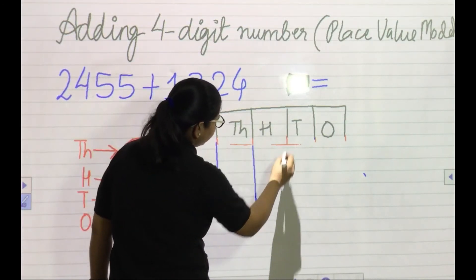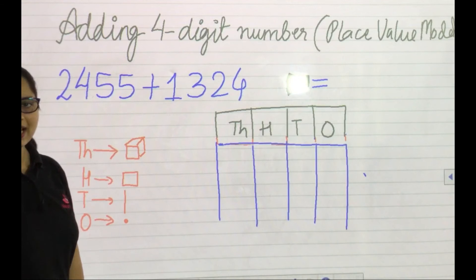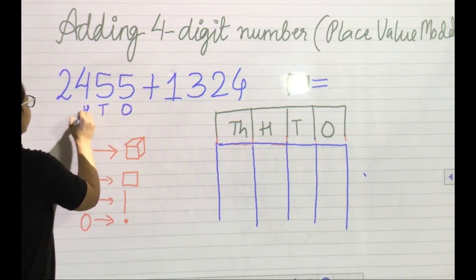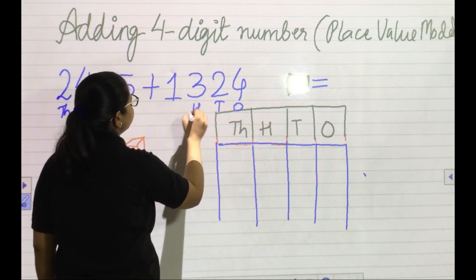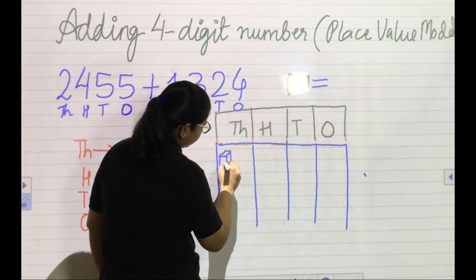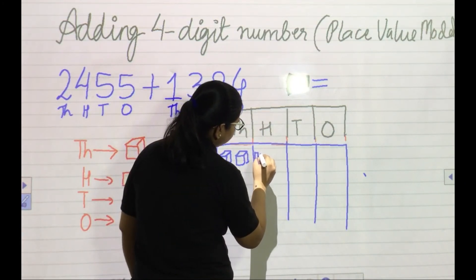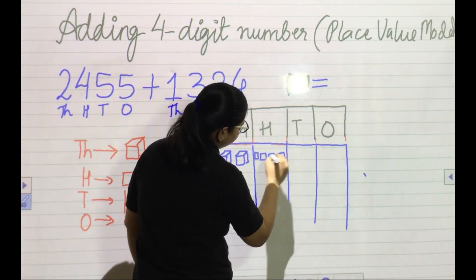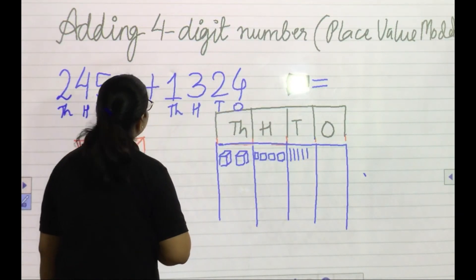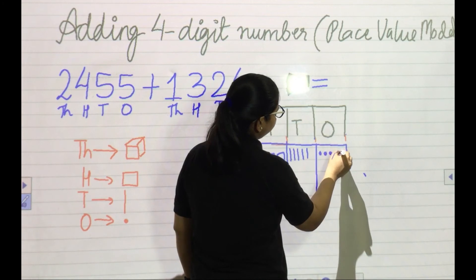Now it's my time to explain and your time to check whether you've done it correctly. The first number is 2455: ones, tens, hundreds, thousands. Two thousands — so two cubes. Four hundreds — four squares: one, two, three, four. Five tens: one, two, three, four, five. Five ones — five dots: one, two, three, four, five.